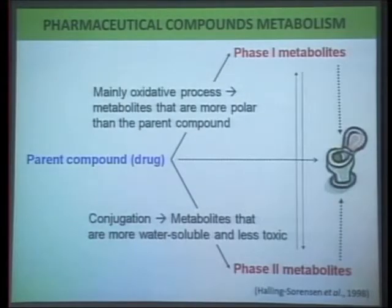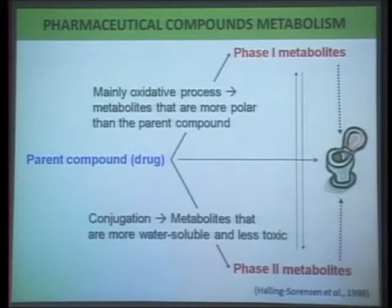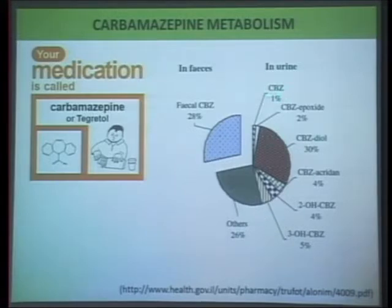When we take a pharmaceutical compound, it is metabolized in our body. Some part of it undergoes oxidative reduction and hydrolysis, becoming more polar — these are called phase one metabolites. They may also undergo conjugation, becoming more water-soluble and less toxic — these are phase two metabolites. Some may not suffer any chemical modification. All of these are excreted by the body. For example, for the anti-epileptic drug carbamazepine, about 72% is excreted in the urine, with about 1% left chemically unchanged. Some metabolites are still biologically active.